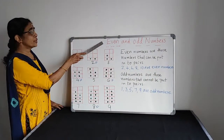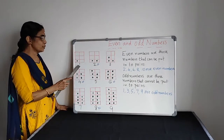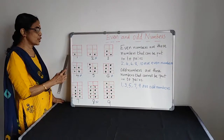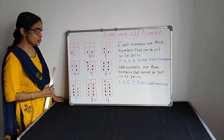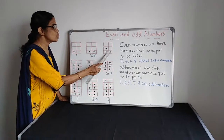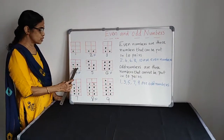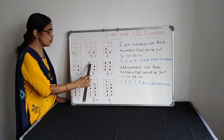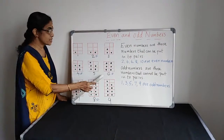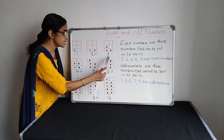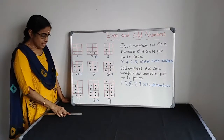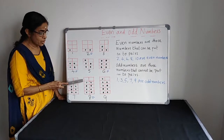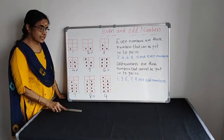Even and odd numbers. First, we have to make boxes like this. Write the number and put the dots. For number one, one dot. For number two, two dots. For number three, three dots. For number four, four dots. For number five, five dots. For number six, six dots. Like this, you write the number, put the dots, and continue.